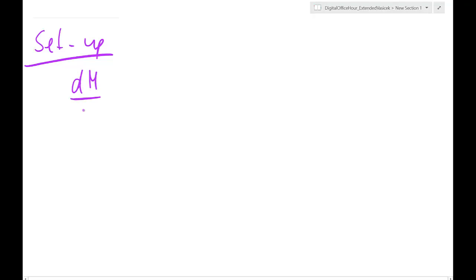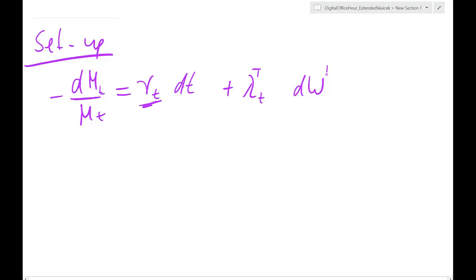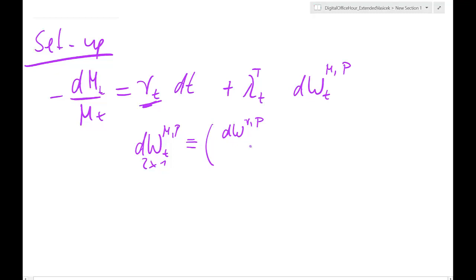The setup is that in our economy we have a stochastic discount factor, which tells us something about the risk-free rate. So we need to specify the risk-free rate, our market prices of risk, and our systematic sources of risk — that's the SDF shock, under P. We want to assume that the systematic shocks in the economy (those that pay a risk premium) shall be two-dimensional, and we want interest rate shocks to be systematic — they will pay a risk premium.